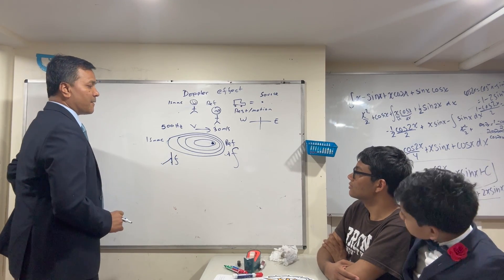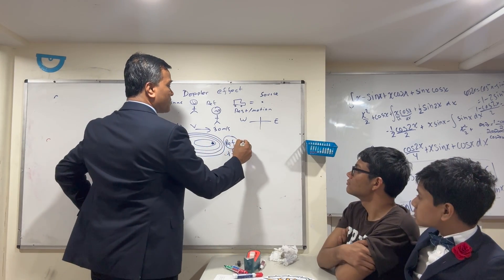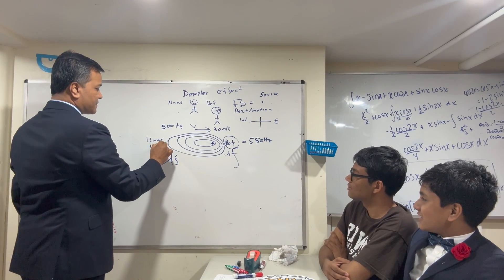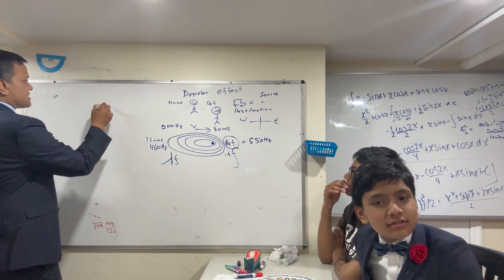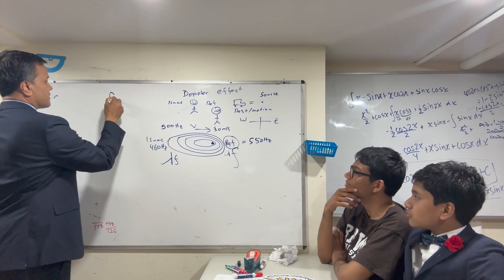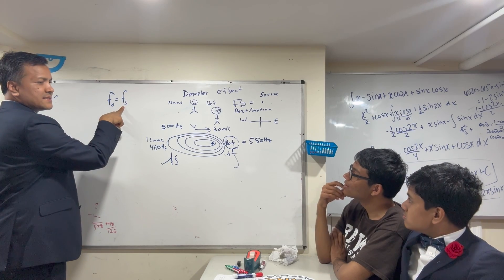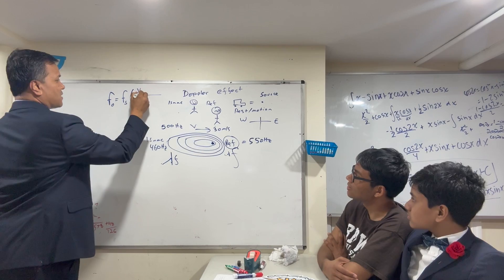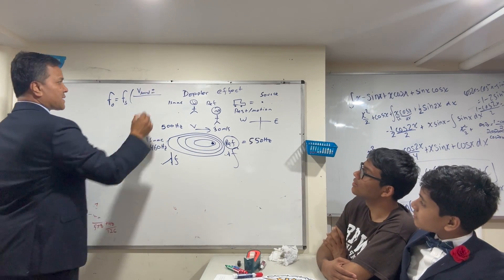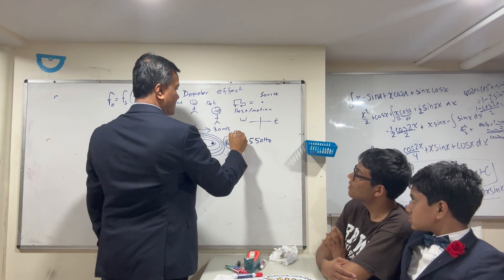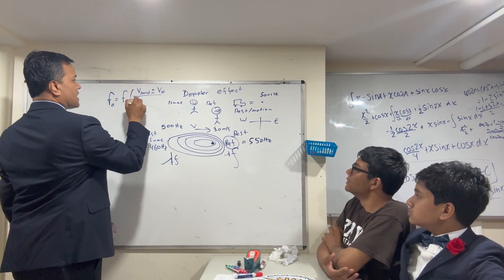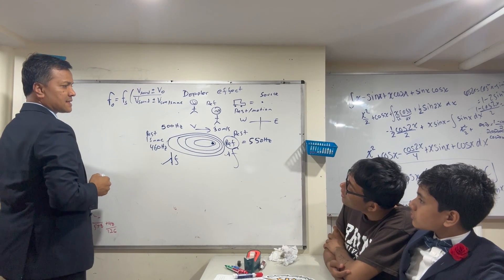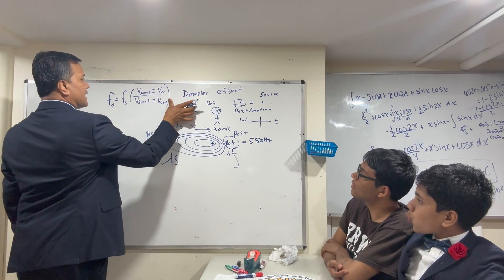Can you tell me the apparent frequency experienced by the observer? Higher — less than 550? We can actually find it — let's calculate it. I'll give you the equation. The observed frequency equals the frequency of the source times: the quantity (velocity of sound plus or minus velocity of observer) divided by (velocity of sound plus or minus velocity of source).